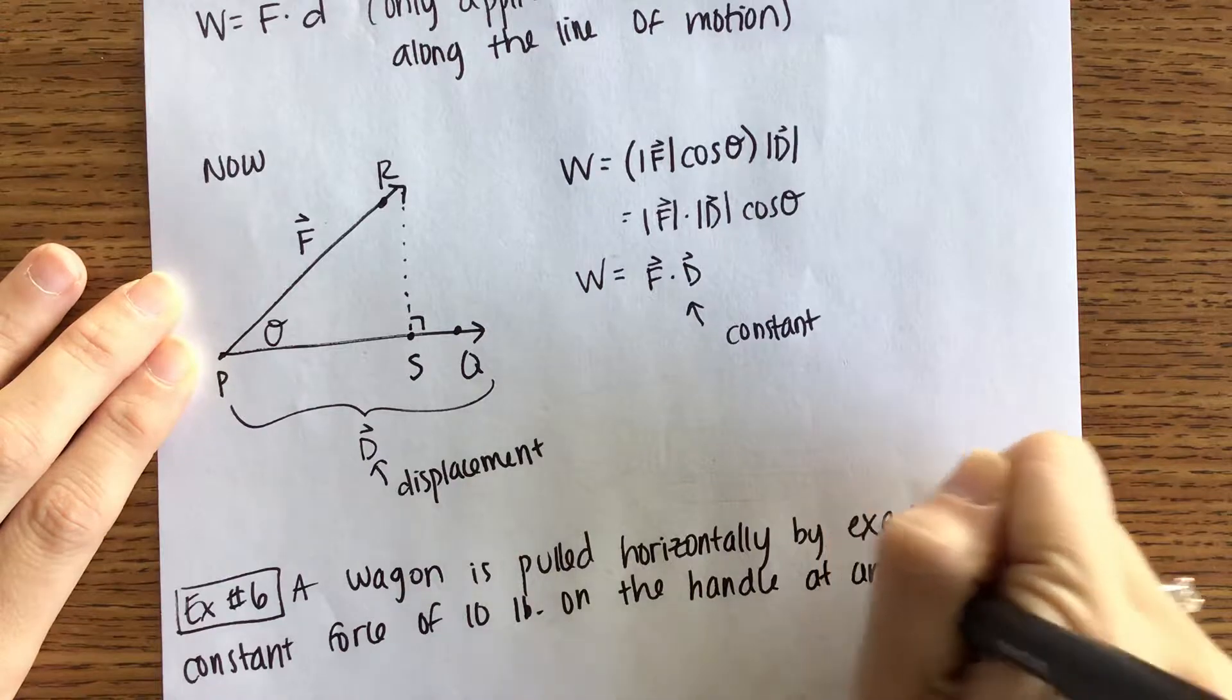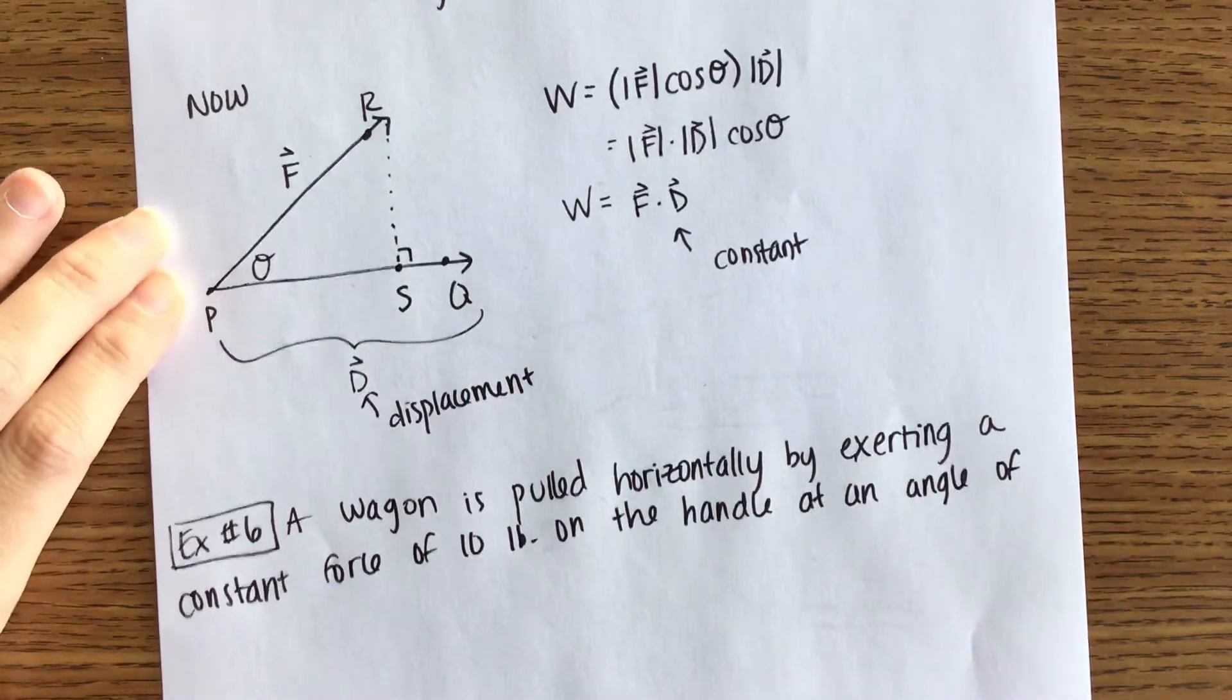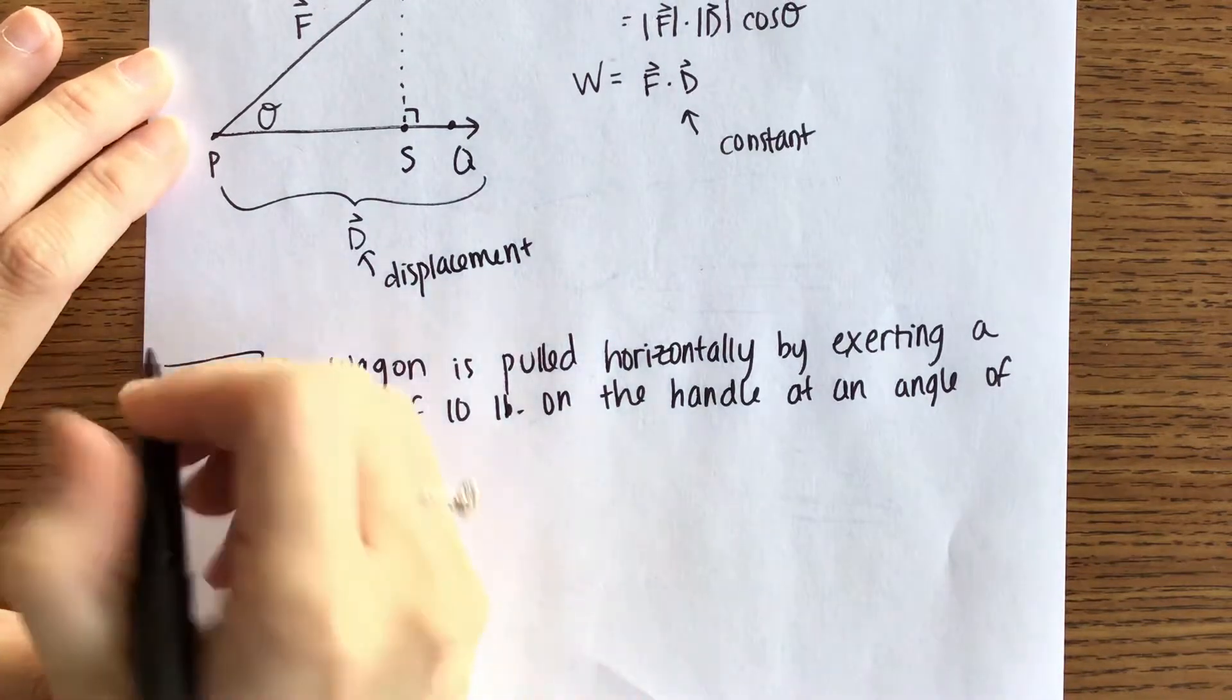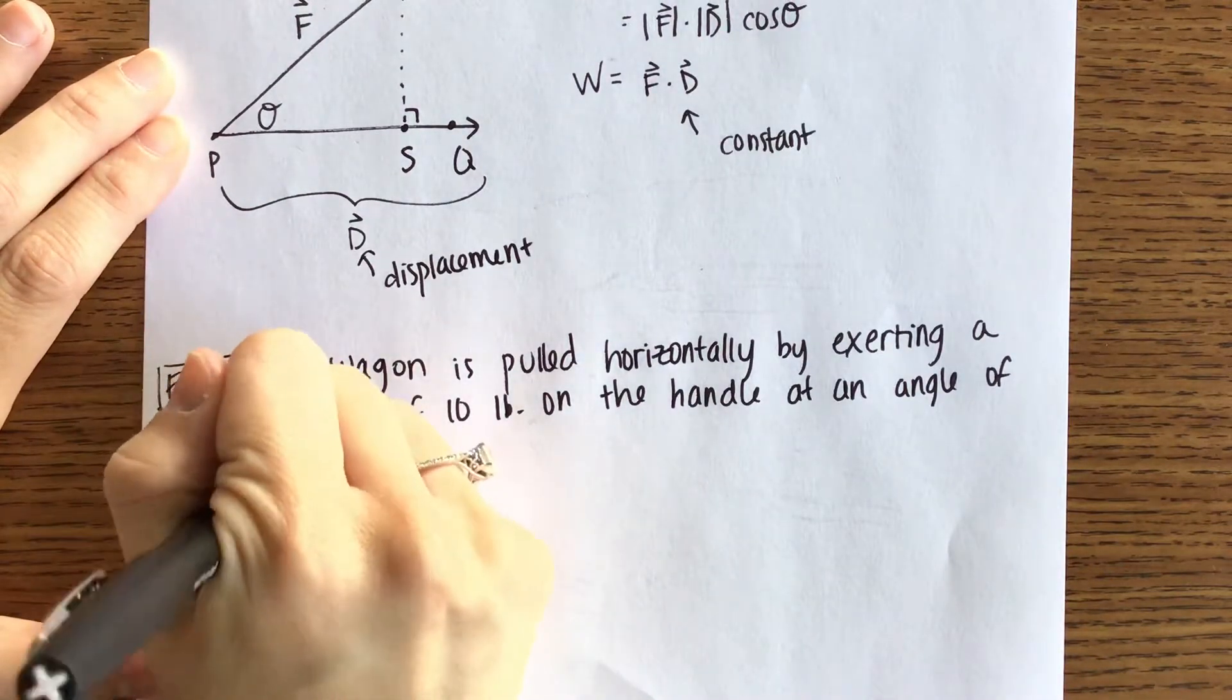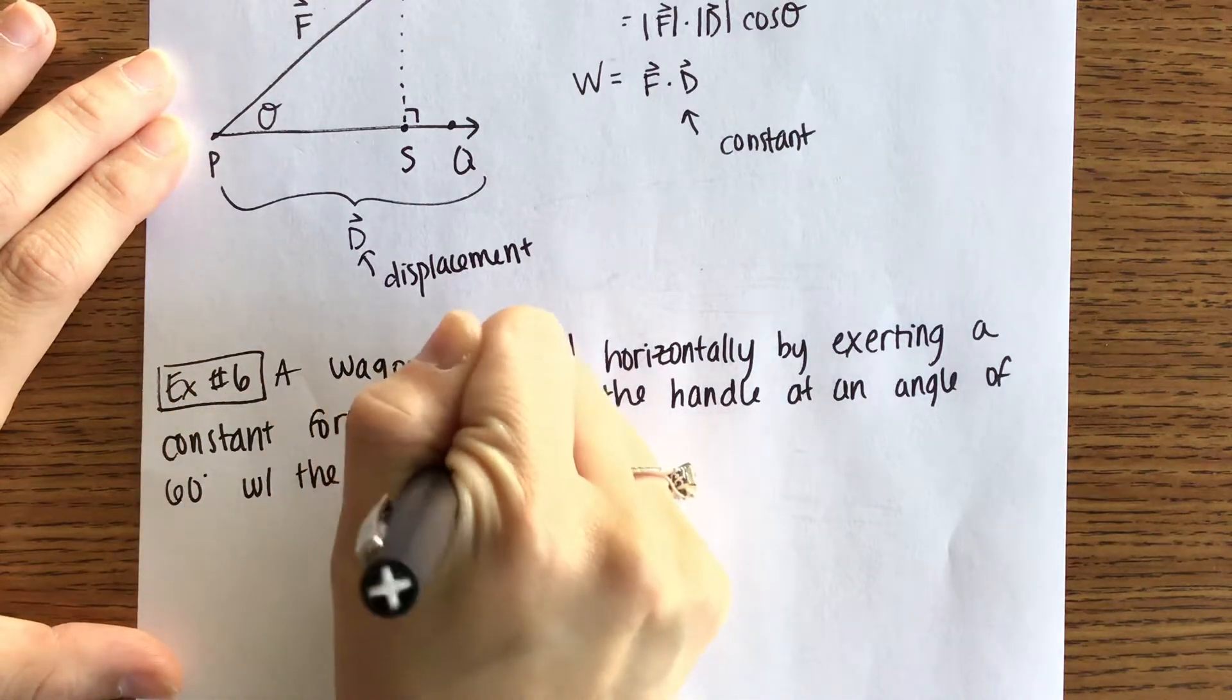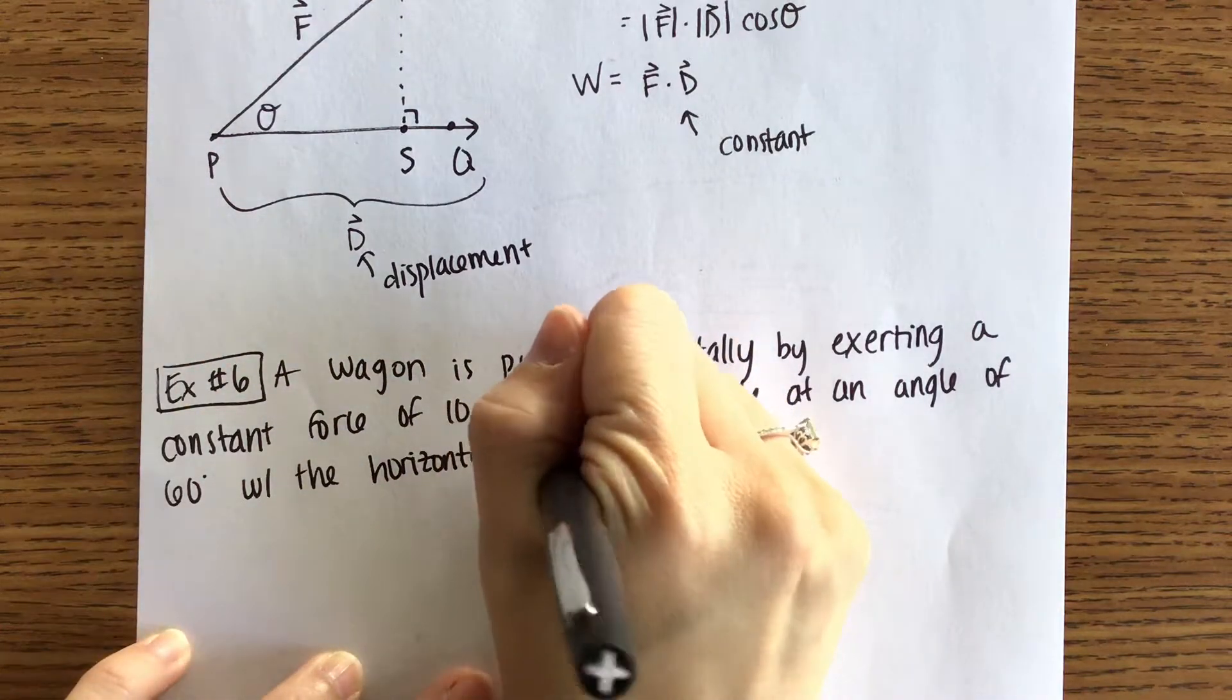At an angle of 60 degrees. Sorry that my handwriting is so crooked. With the horizontal. How much work is done in moving the wagon 50 feet?